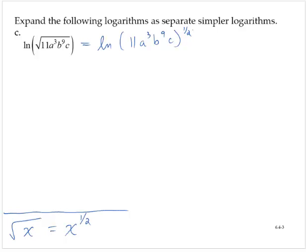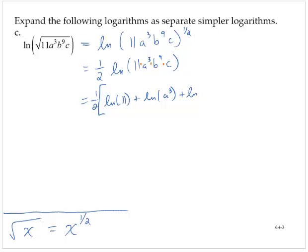This allows me to use one of our rules for logarithms: if I have a logarithm of a quantity to a power, I can bring the power in front as a coefficient. So I now have one half times the natural log of 11a cubed b to the ninth c. On the inside, I have a product of 11 times a cubed times b to the ninth times c, so I can rewrite all of those using addition of logarithms: one half of the natural log of 11 plus the natural log of a cubed plus the natural log of b to the ninth plus the natural log of c.